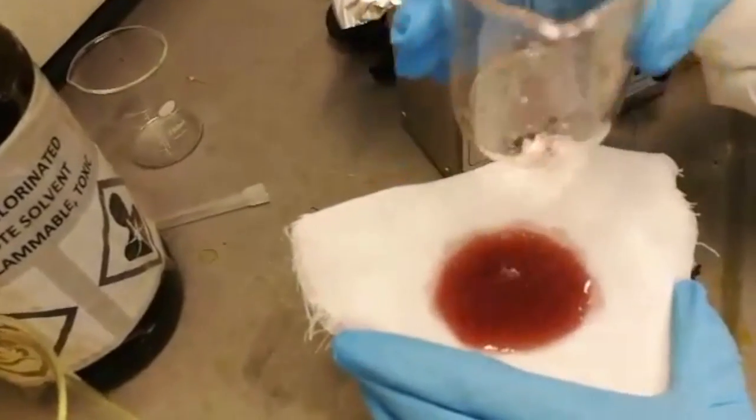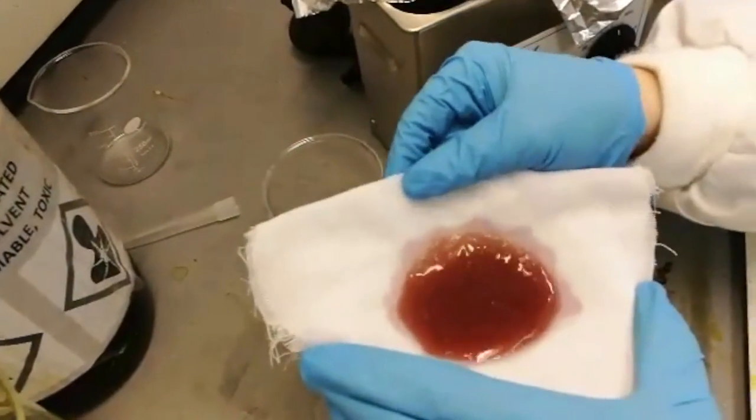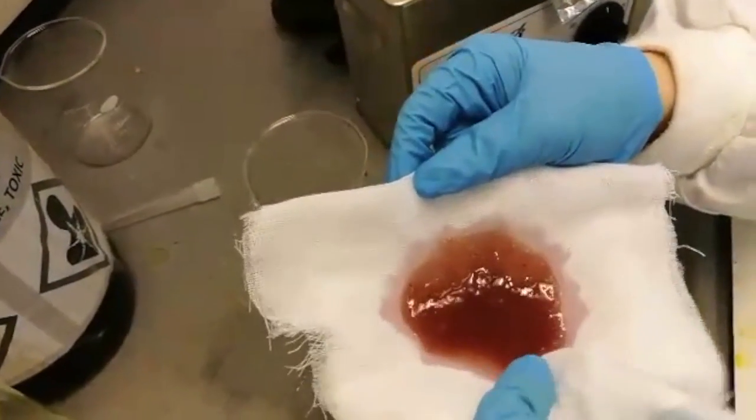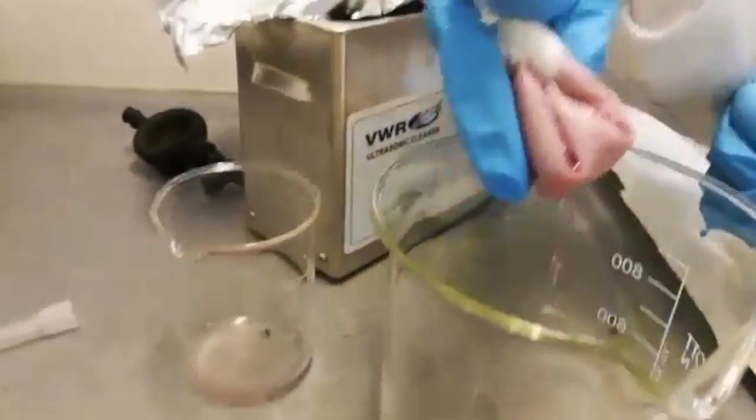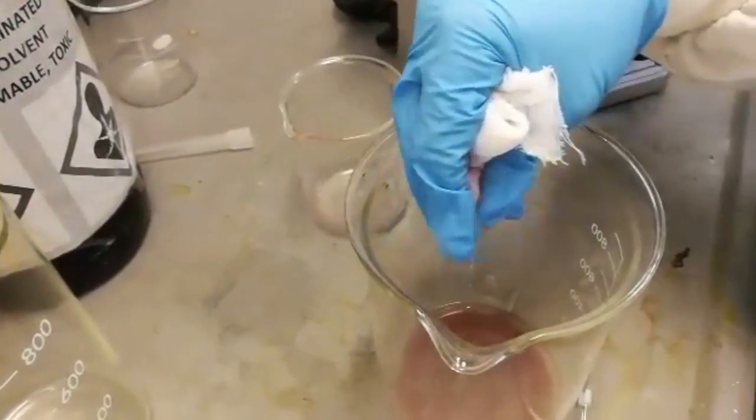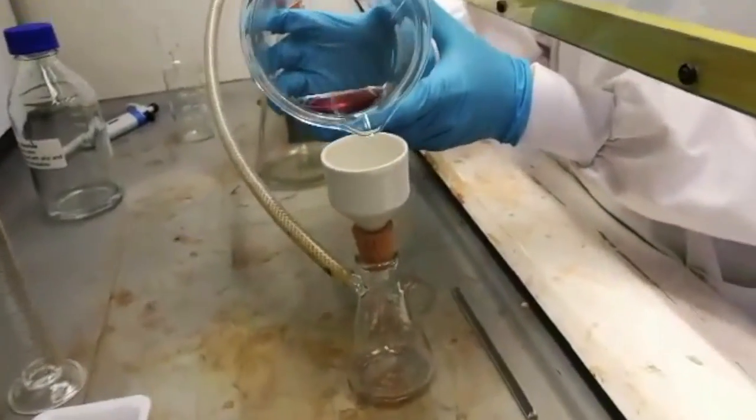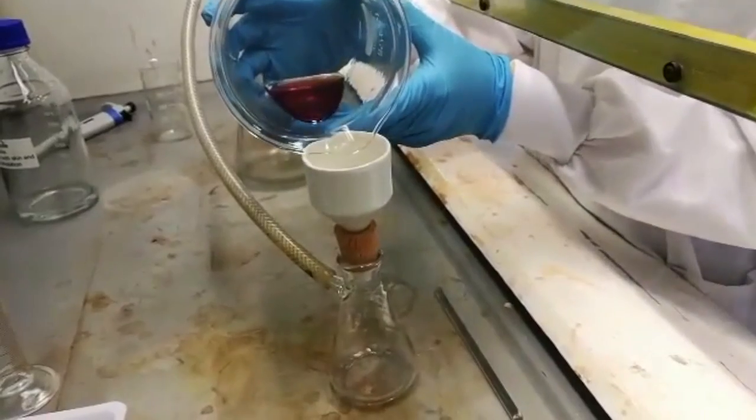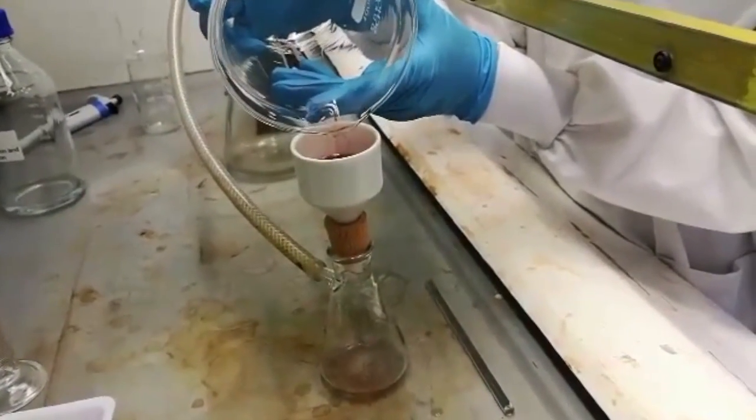After 15 minutes in the ultrasonic ice bath, the sample was filtered using a muslin cloth. This was used to remove larger particles from the sample before proceeding to use a finer filter. Next, we used the final filter to ensure smaller particles were removed from the sample.